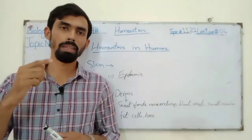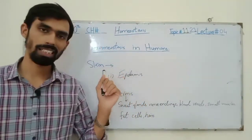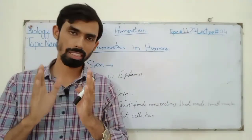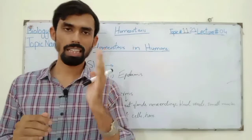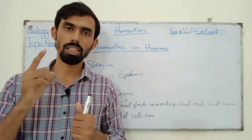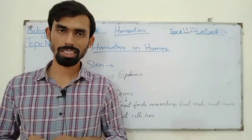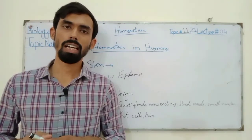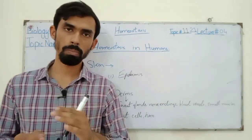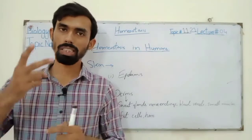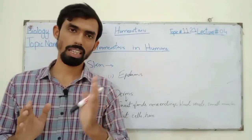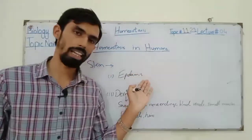Students, first of all, we have to study skin. How does homeostasis work through skin in humans? First, we will study the structure of the skin. We know that the first layer of skin is called epidermis. Epidermis is the outer layer. The second layer, we call dermis. We'll discuss these two layers.